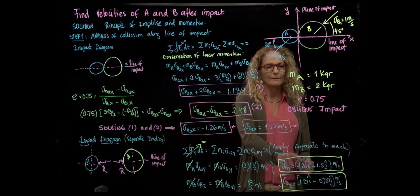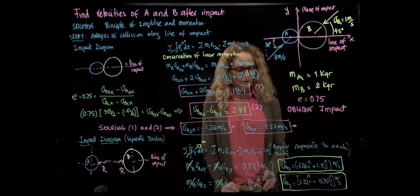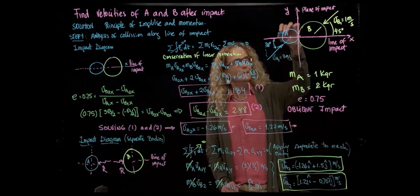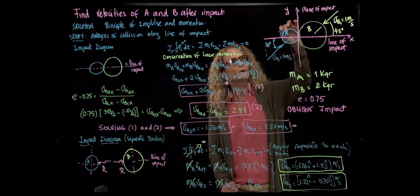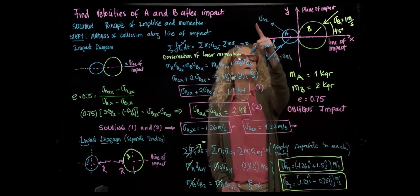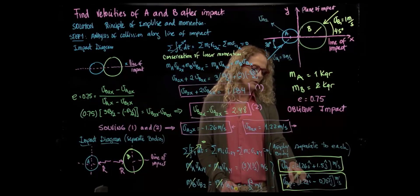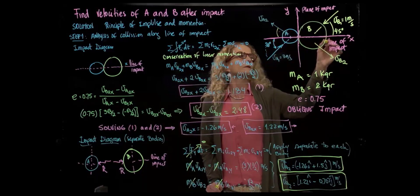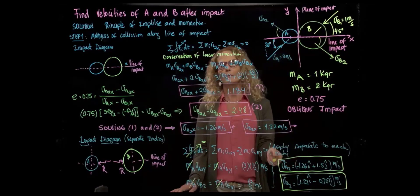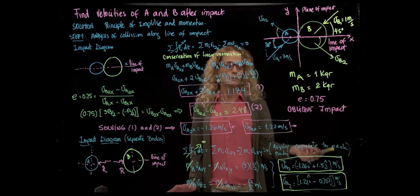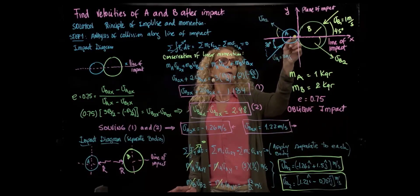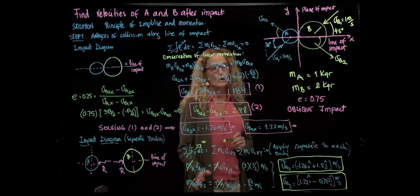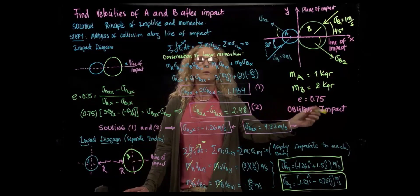Drawing the vectors: velocity A2 has a negative x-component and positive y-component, while velocity B2 has a positive x-component and negative y-component. To find the magnitude of any vector, take the square root of the sum of the squared components. The angle is found from the y-component divided by the x-component using arctangent. We were able to find the velocity of A and B after impact for this oblique impact problem.